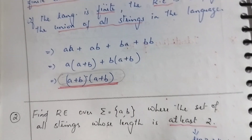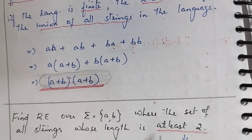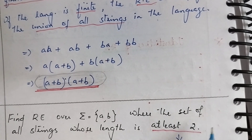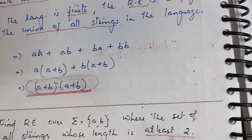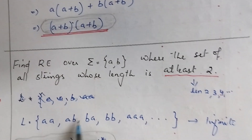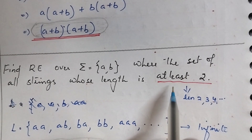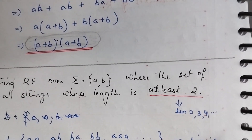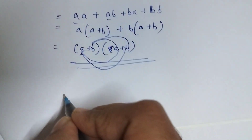Another problem: find the regular expression over input symbols a and b where the set of all strings whose length is at least 2. At least 2 means the minimum length is 2 and the maximum is any number. The language consists of strings of length 2, 3, 4, and so on — this language is infinite.